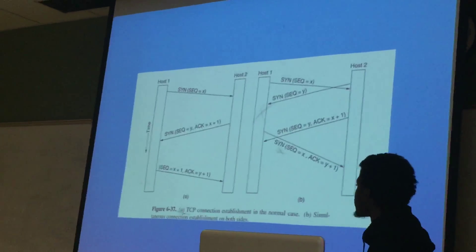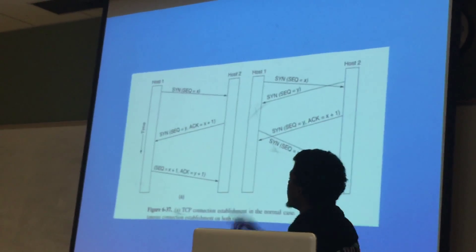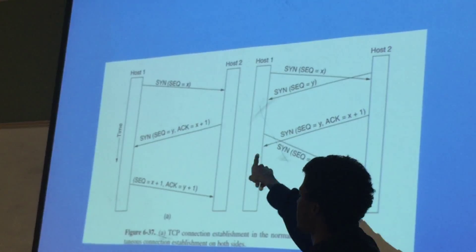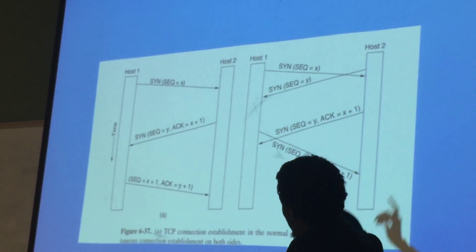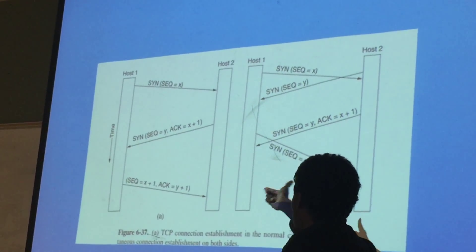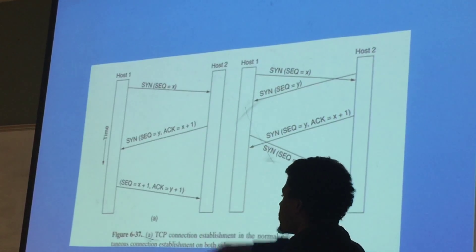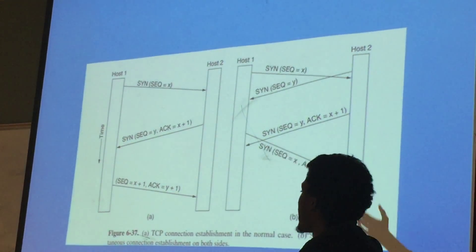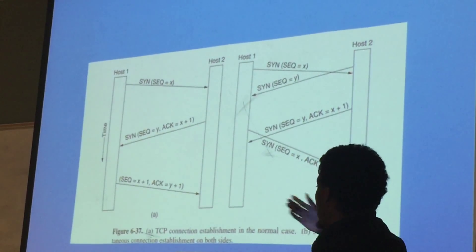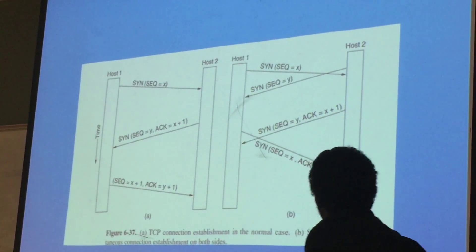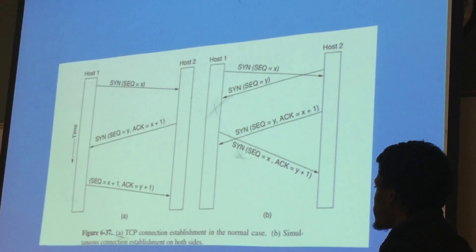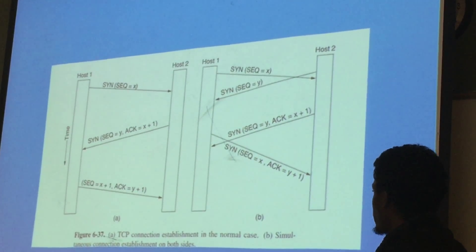Here we have an image. Host 1 sends the first segment with its sequence number and the SYN flag set. Host 2 responds with its own sequence number and an acknowledgement number for the next byte it's expecting from host 1, so the ACK is set. Then lastly, host 1 sends an acknowledgement to host 2. This also shows simultaneous connections when both hosts are trying to connect to one another at the same time.